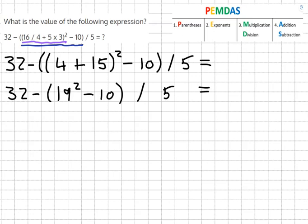And now here we've got exponents inside of our parentheses, so we'll do that first and that becomes 32 minus 19 squared. 19 times 19 equals 361 minus 10 over 5.